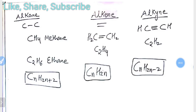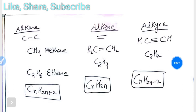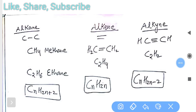Students, last week we started the chapter organic chemistry, in which we described these three things which mainly come in your exam: alkane, alkene, and alkyne. These are the basic things. Whatever we are going to read further about their preparation, IUPAC names, etc., if you don't know these basic things, you are not able to understand the whole concept.